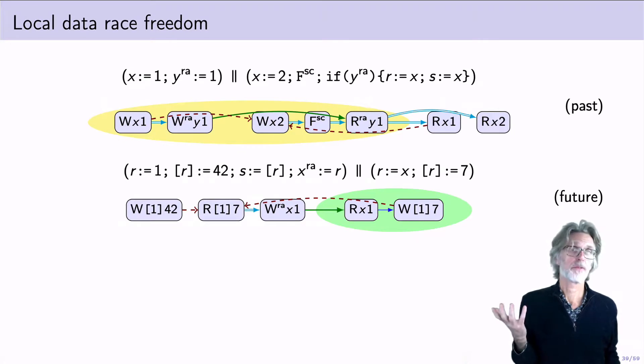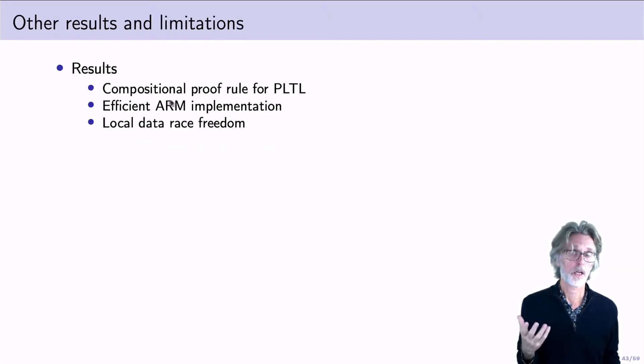In the paper, we prove local data race freedom, which states that if I have a stable synchronization point and I do some reads, well, then I'm not actually going to be polluted by races from the past, as shown by the cycle here. Racy behavior is also quarantined from the causal future. You can see an example here where a future race is sort of polluting something in the past, and again, disallowed due to the cycle. The main results we give are compositional proof rule for propositional linear time temporal logic, the efficient ARM implementation, and local data race freedom.